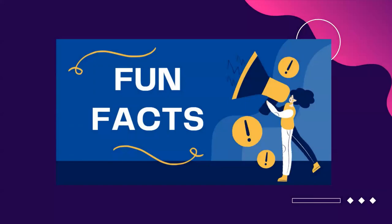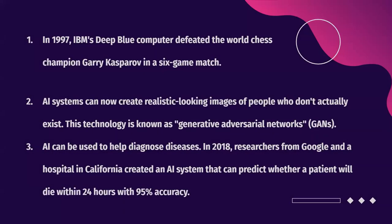So let's go over some fun facts about AI. In 1997, IBM's Deep Blue Computer defeated the world chess champion at the time, Garry Kasparov. AI can also be used to help diagnose diseases. In 2018, researchers from Google and a hospital in California created an AI system that can predict whether a patient will die within 24 hours with 95% accuracy.